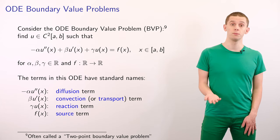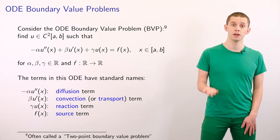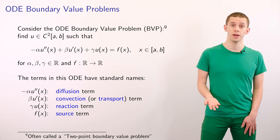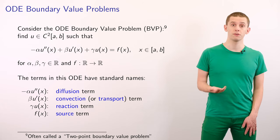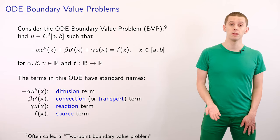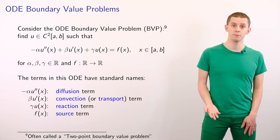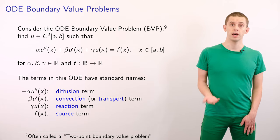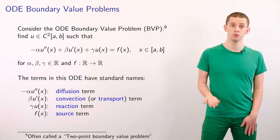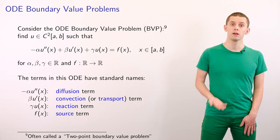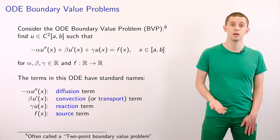Let's consider the two-point ODE boundary value problem, or BVP, where we aim to find a second differentiable function u over the interval from a to b that satisfies: minus alpha u double prime plus beta u prime plus gamma u is equal to f of x. Here alpha, beta, and gamma are real constants and f is a scalar function. ODEs of this type emerge in many situations — in particular, this ODE can model the steady-state behavior of an advection-reaction-diffusion system.